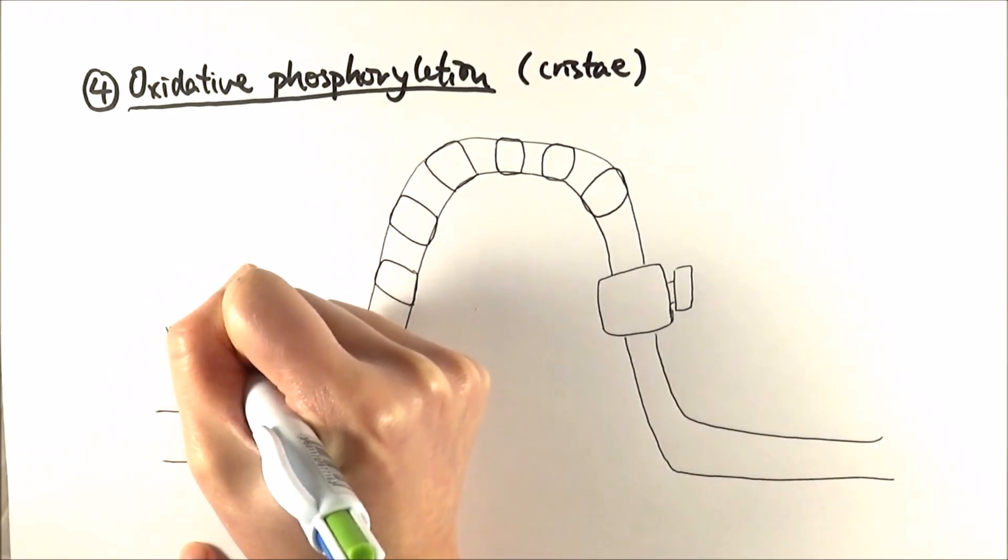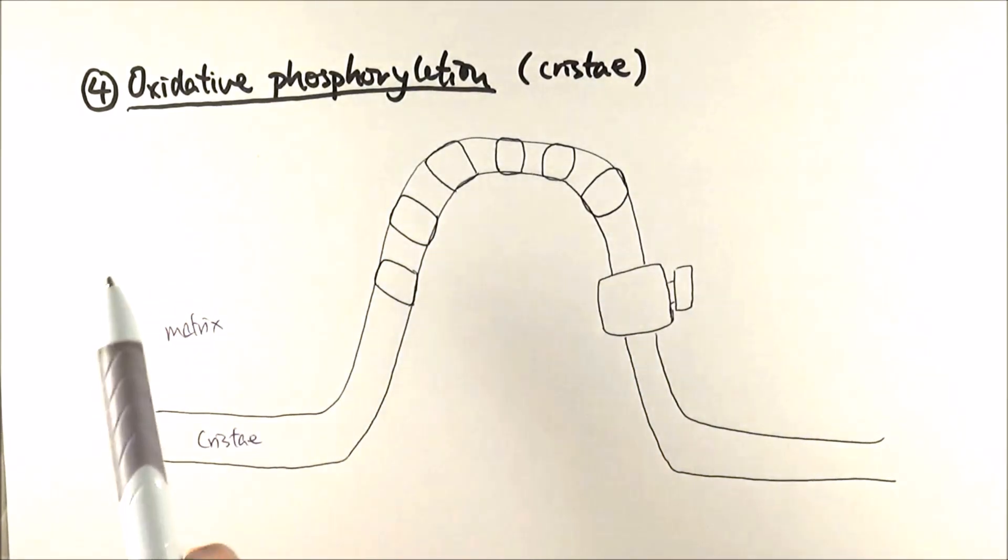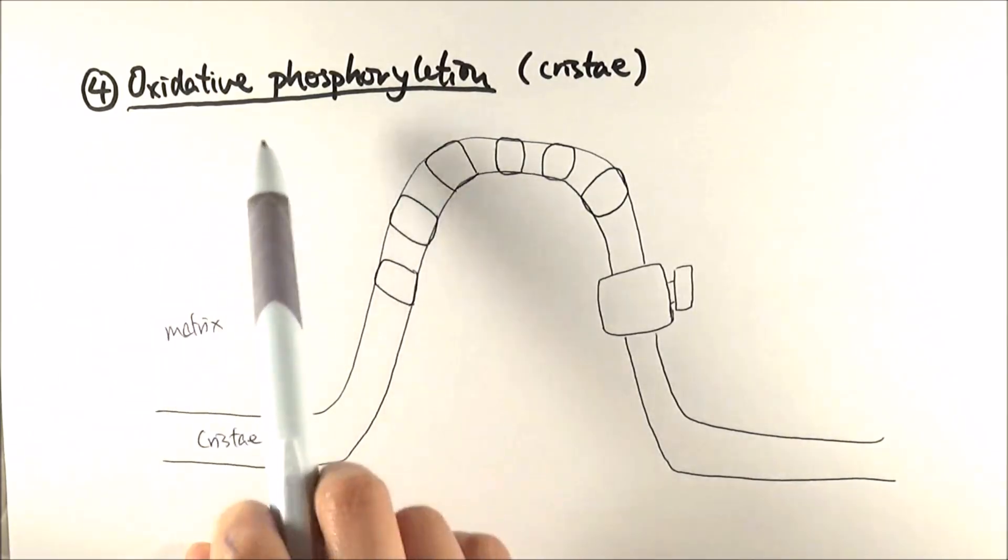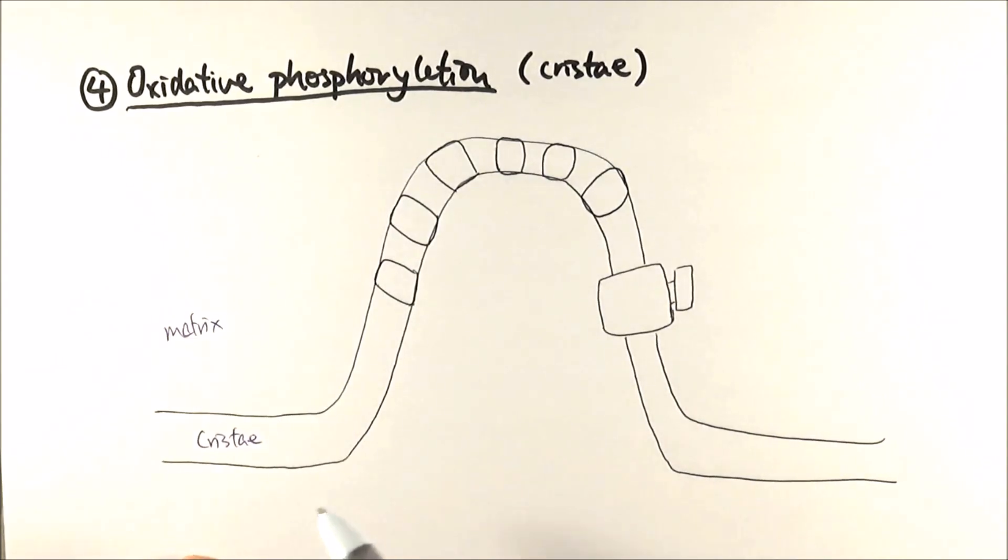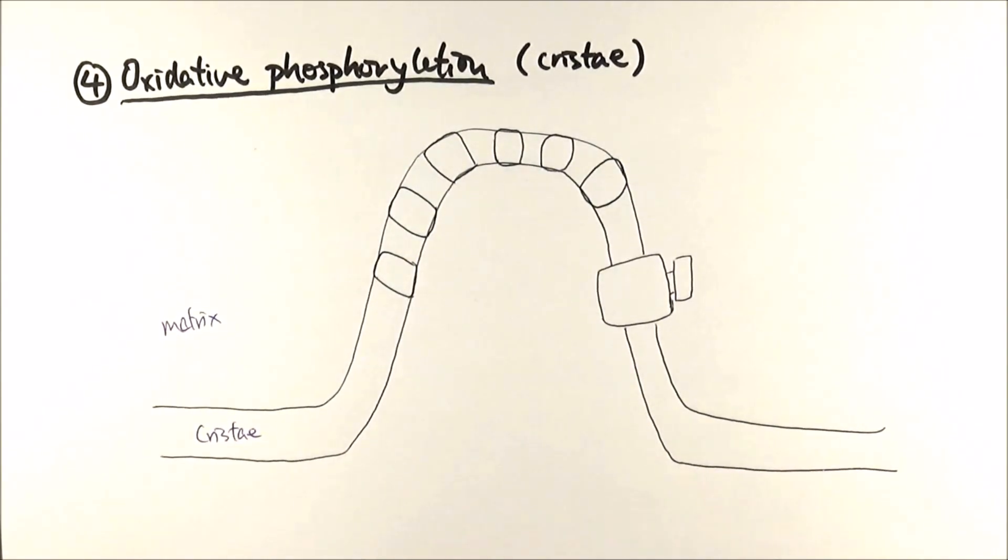We just had our link reaction and Krebs cycle, so the final products of all the reduced NAD and FAD will be all in this area here. On the other side, we've got the outer membrane on the outside of it, which we've got the intermembrane space here.